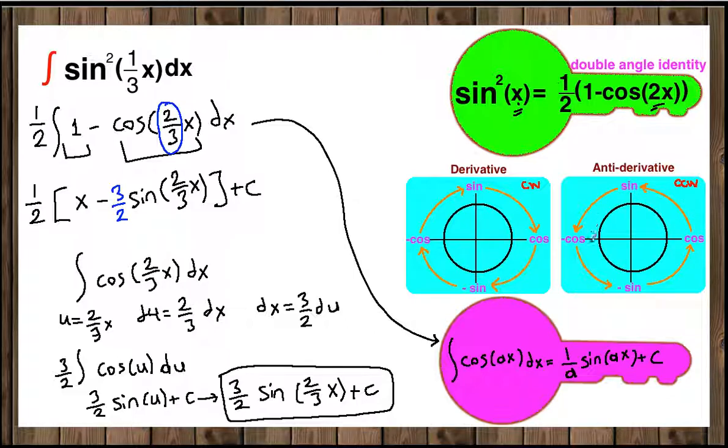Don't forget that the antiderivative of cosine is positive sine. If you go counterclockwise, you get the antiderivative of each trigonometric function. If you go clockwise, you get the derivatives of each trigonometric function.